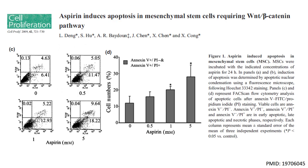In a similar study published in 2009 in the journal Cell Proliferation, Deng and colleagues revealed aspirin to induce programmed cell death, or apoptosis, in mesenchymal stem cells. The authors utilized a cell surface marker known as Annexin-5 that is associated with cells undergoing an apoptotic process.